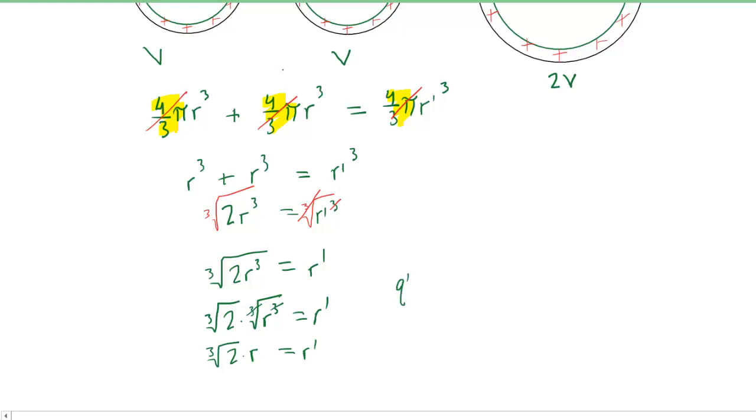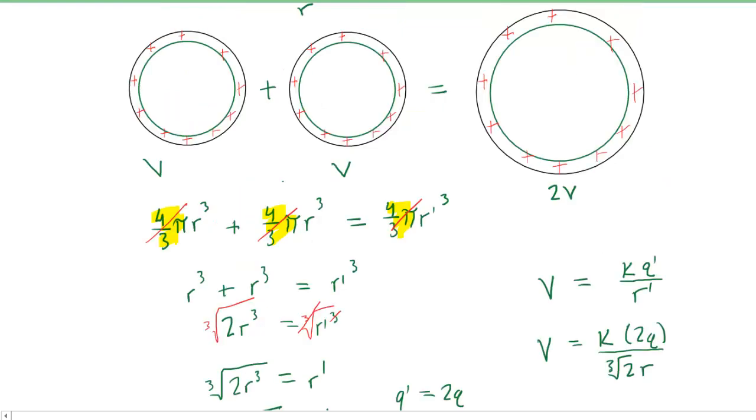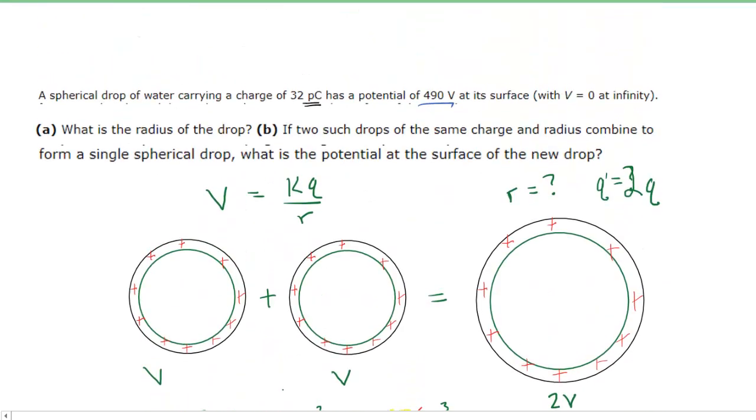Recalling also that the new charge was simply 2Q, we are ready to calculate the potential at the surface. We go back to our formula for calculating the potential at the surface of a spherical shell. We're going to plug in our known values. So this time, the Q is actually the Q prime and the R is the R prime, because it's the new drop. So we'll put in 2Q right here. And then the cube root of 2 times the radius down there. And then we're going to use the same values for Q and R that were given in the setup of the problem. So we go back up, and we had the Q of 32 picocoulombs, and the R we actually found in part A.